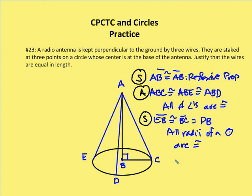So by CPCTC, I can say that AC is congruent to AD, is congruent to AE. And we'll say that by CPCTC.